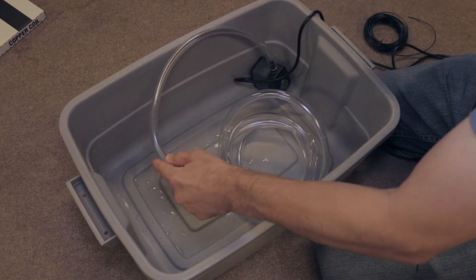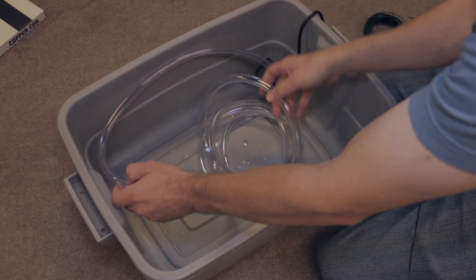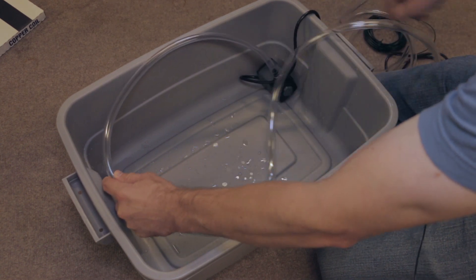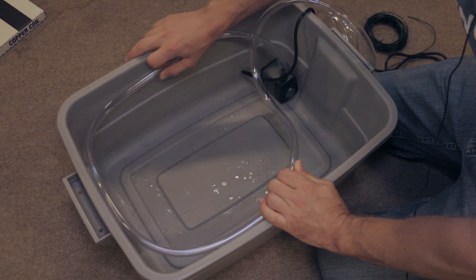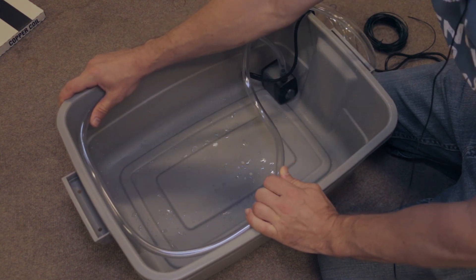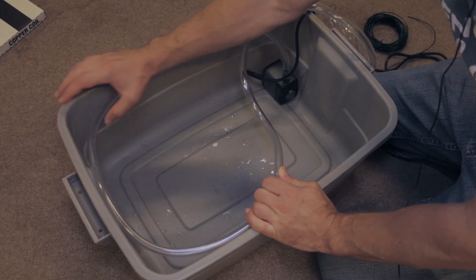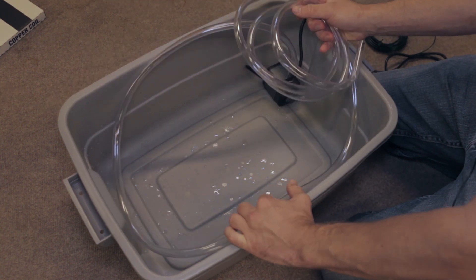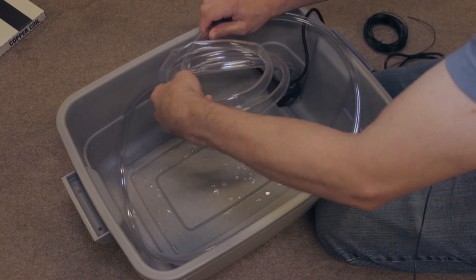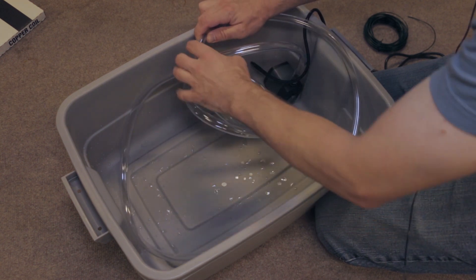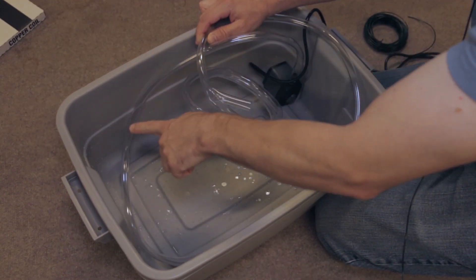Then what you do is take your tubing and you're going to put it around the container. You're going to mock it up first, so just kind of push it into the corners a little bit so it gets around to the edges. Then get all the way around to the other place where you started.